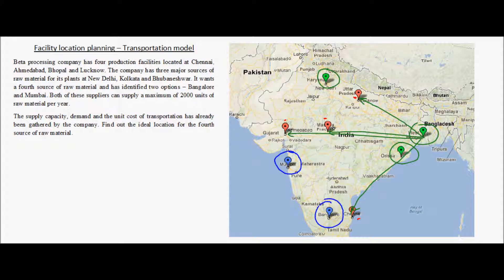Each source of raw material has a certain capacity it can supply, and each plant has a certain demand it needs from these sources. There is also a certain cost of shipping a unit of material from each source to each production plant. The company wants to find out which option — Mumbai or Bangalore — will give them a lower total transportation cost.